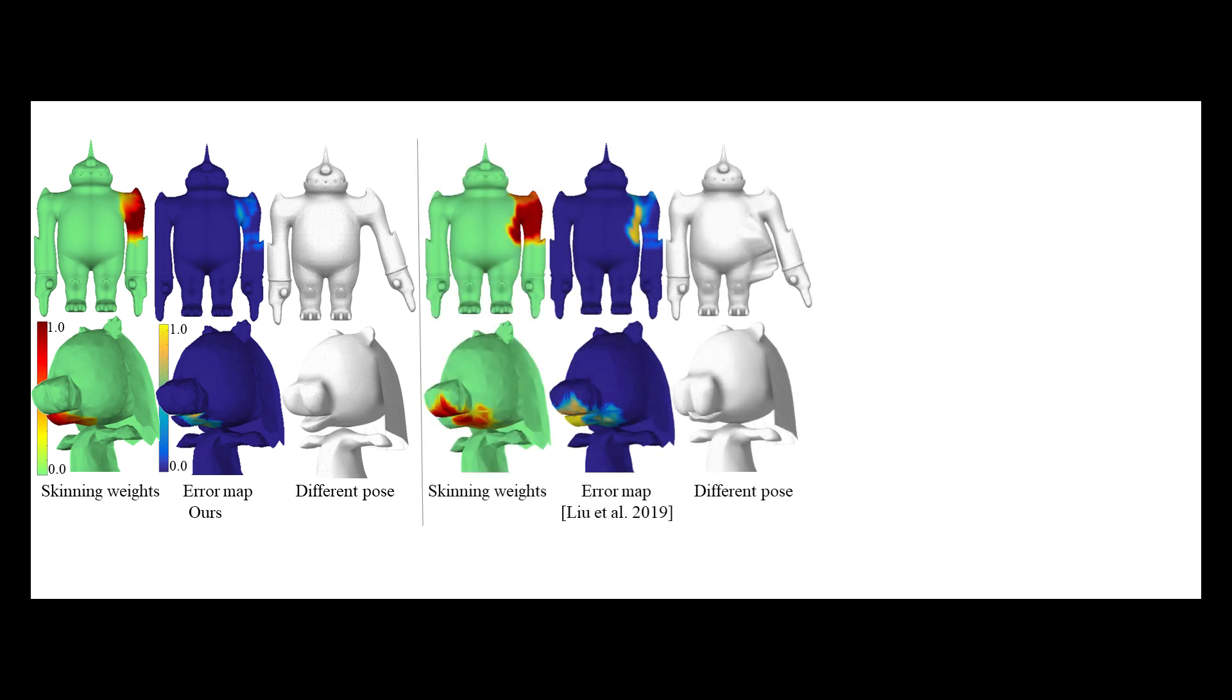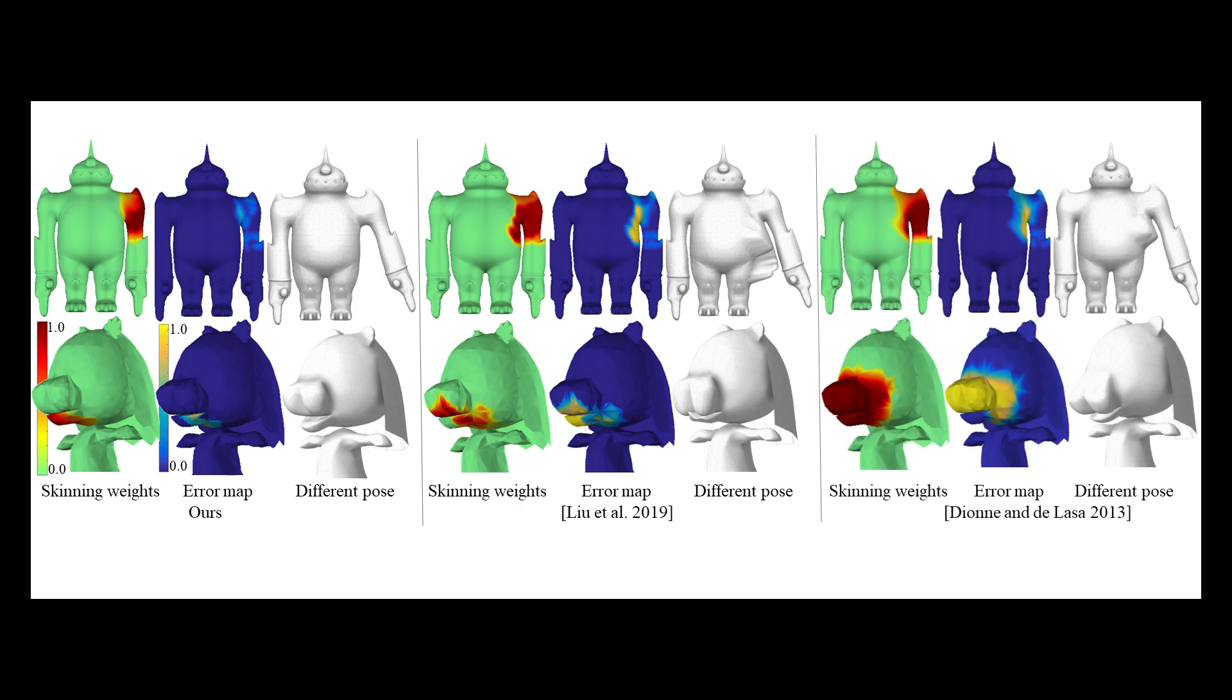Here we visualize skinning weights, skinning error maps, and also a different pose of the character based on the estimated skinning from our method. We also show results from a previous learning-based method for skinning, and a geometric one.